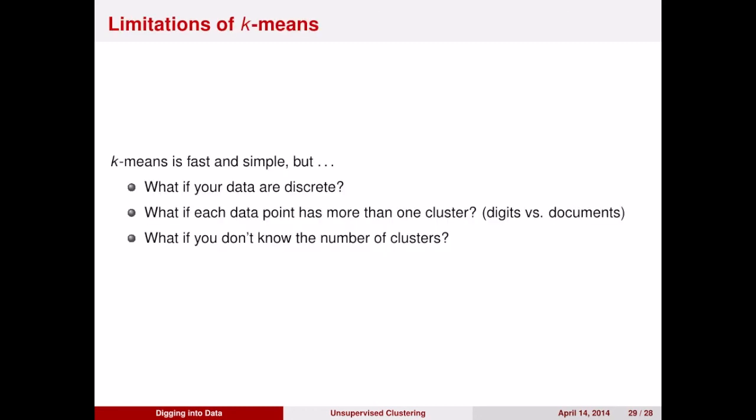While k-means is very fast and simple, it does not help you in situations where your data are discrete or if your data can belong to more than one cluster. It makes sense that if you're trying to cluster the symbols that people write on an envelope, they will represent only one letter or number. But what if you're trying to separate documents into topics? In that case, it doesn't make sense to assume that each document has only one topic — an article can be about both medicine and sports. Another problem is what if you don't know the number of clusters that you need to find a priori. For the rest of today, we'll be talking about algorithms that allow you to discover multiple clusters per individual data point and apply them to text documents. These algorithms are called topic models.